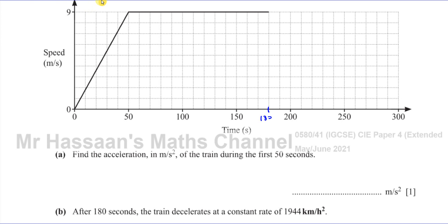The acceleration from a speed-time graph is found by using the gradient. The gradient of a speed-time graph tells us about the acceleration because acceleration is the rate of change of speed — and that's what gradient is, the rate of change of something. So the rate of change of speed (y) over the rate of change of time (x) will be the gradient. We can see in the first 50 seconds there is a constant gradient.